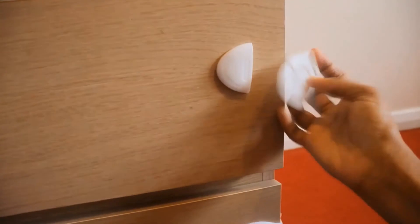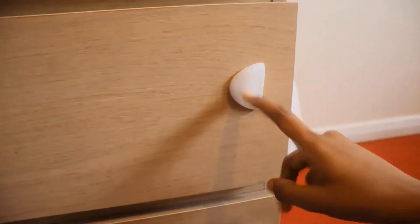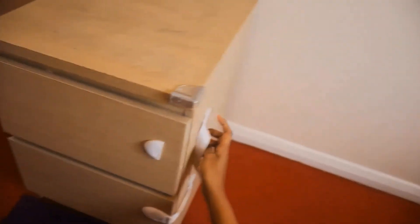Next one is a safety lock. My baby started crawling around and pulling and playing with this drawer, so we bought this safety lock. We can attach it by removing the strip at the back and lock it.